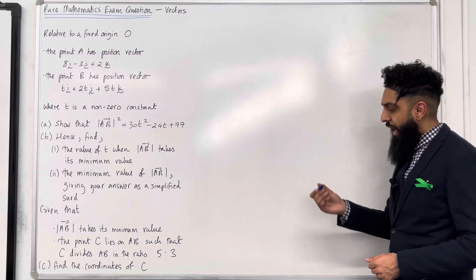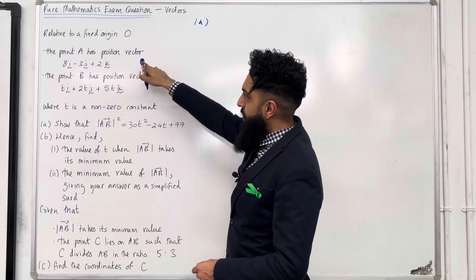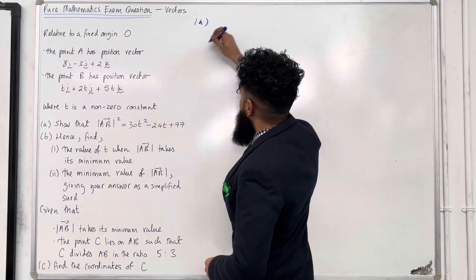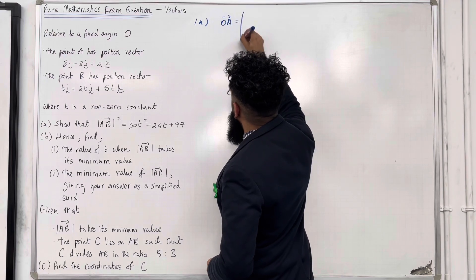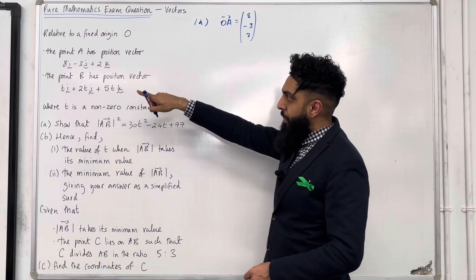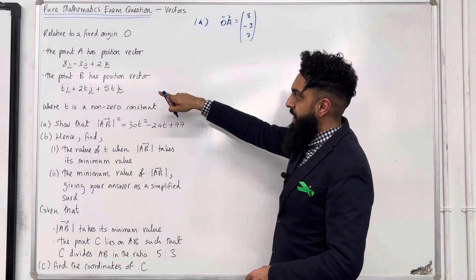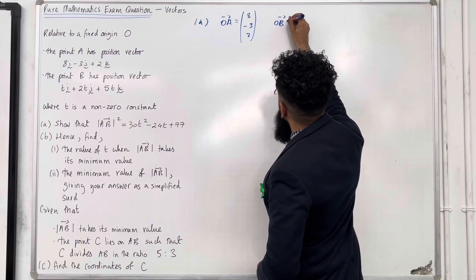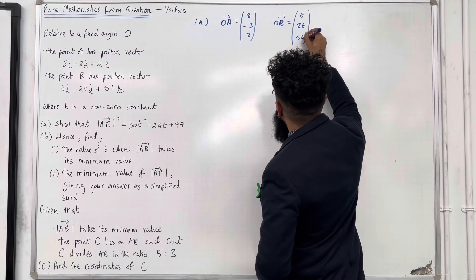Okay, so let's have a look at the solution to part A. The point A has position vector 8i minus 3j plus 2k, which means that the vector O to A is equal to (8, -3, 2). The point B has position vector Ti plus 2tj plus 5tk, which means that the vector O to B is equal to (t, 2t, 5t).